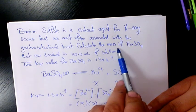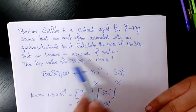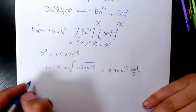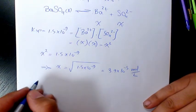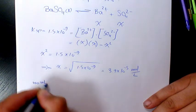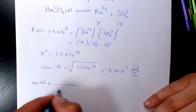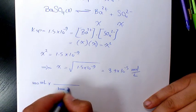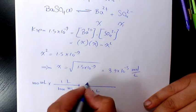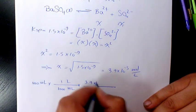It says what's the mass of barium sulfate that can be dissolved in 100 milliliters of solution? So we're gonna have 100 milliliters. We're gonna say 1000 milliliters equivalent to 1 liter. We are dealing with 3.9 times 10 to the power of negative 5 mole of barium sulfate per liter.